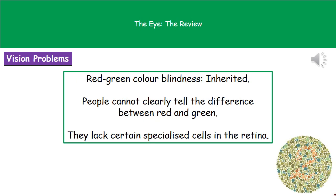There are a few problems associated with vision. The first is an inherited condition caused by your genes: red-green colour blindness. In this condition, people can't clearly tell the difference between red and green. You can test this by looking at the picture in the bottom right-hand corner — if you can make out the number written in a different colour, you have no problem with colour vision; if you can't, you may have some degree of red-green colour blindness. The reason is that sufferers lack certain specialised cells in the retina that allow us to distinguish between red and green.